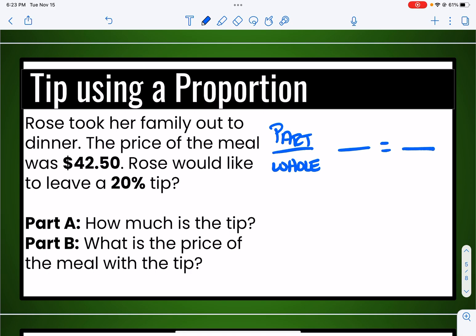Now the tip, she must have gotten some good service because she wants to leave a 20% tip. So the percent, remember, always goes over 100. And then the tip is the part of the meal. We're going to take part of the price of the meal and we're going to leave it extra as the tip. And the whole price of the meal before tax is $42.50.